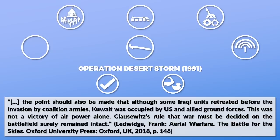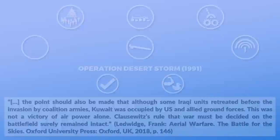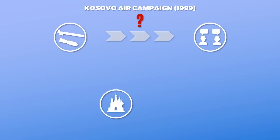Clausewitz's rule that war must be decided on the battlefield surely remained intact. Similarly, the Kosovo air campaign from 1999 is seen by some as a case of bombing Yugoslavia back to the negotiation table. Yet some authors point out that the threat by Russia of retracting its support, and the possibility of a US ground invasion that would have resulted in a regime change, brought Milosevic finally back to the table — though that the air campaign should not be dismissed.